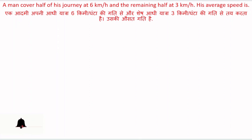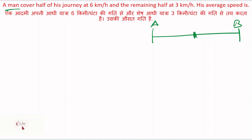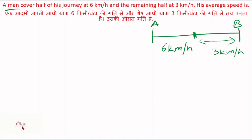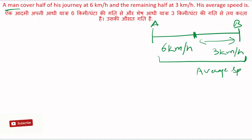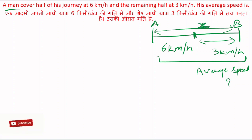Suppose कोई distance है। एक आदमी आधा distance, half journey, 6 km per hour की speed से cover करता है और जो remaining half है उसको 3 km per hour की speed से cover करता है। तो पूरे journey में उसका average speed क्या होगा? वो निकालना है। Suppose इस distance को अगर हम लोग x मान लेते हैं।